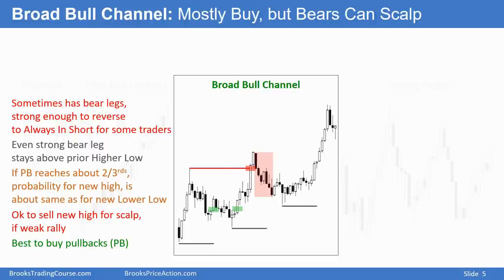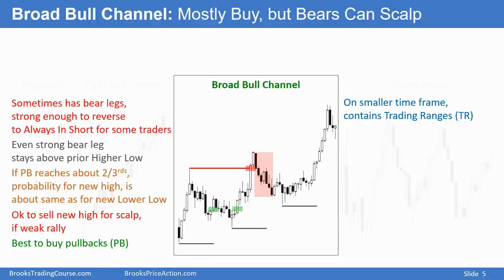On a smaller timeframe chart there are trading ranges. If this is an hourly chart and you looked at a five-minute chart, this would be about 15 to 20 hours of sideways trading — just a big trading range. On a higher timeframe chart, this could be a very tight bull channel, and if you go to an even higher timeframe chart it could simply be a breakout. For example, if this is a five-minute chart and you looked at a four-hour chart, it may be simply a couple big bull trend bars closing on their highs.